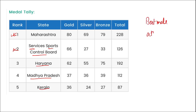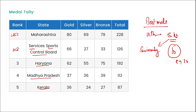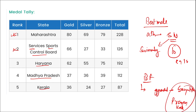Best Male Athlete was Srihari Nataraj from Karnataka, who is a swimmer and won a total of 10 medals — 8 gold, 1 silver, and 1 bronze. Best Female Athlete was Sanyukta Prasad Kale from Maharashtra — a gymnast who won 5 medals, 4 gold and 1 silver.